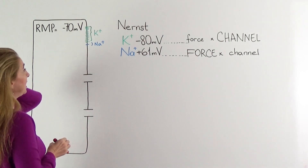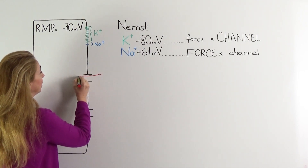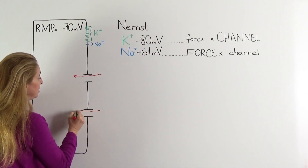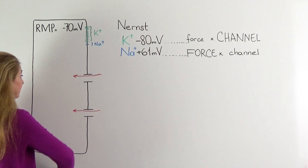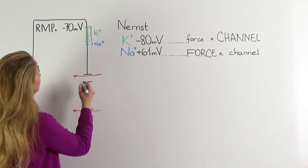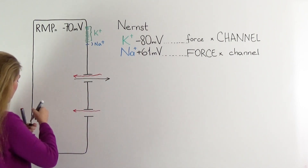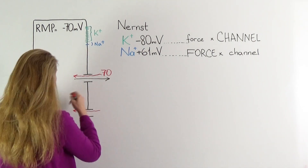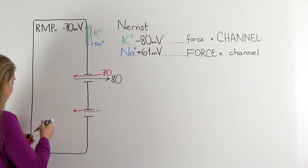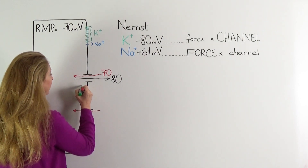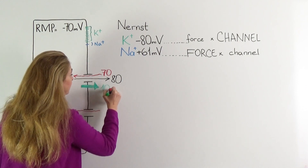Let us examine the driving forces for each of these ions in the cell. The first force is the electrical potential, and the electrical potential being negative on the inside is going to pull both of these positive ions into the cell. For potassium, the chemical force — which is the force of the concentration gradient — is going to push potassium out of the cell. The electrical force is about 70 millivolts, whereas the chemical force for potassium is approximately 80 millivolts. As a result, we see that there is a net driving force for potassium of only 10 millivolts.